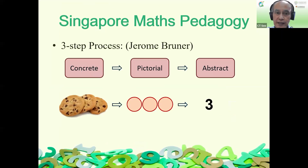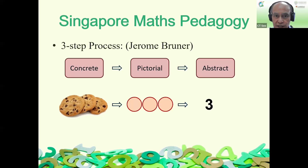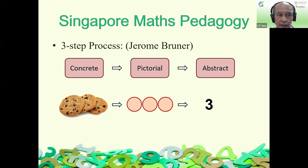Another key feature used in primary Maths is the three-step process of learning: Concrete, Pictorial, Abstract - CPA. This comes from educational psychologist Jerome Bruner. Young children learn things in a concrete manner - they need to see, touch, and play with things. That's why in kindergarten you don't just hold up a bag of apples and ask how many are there - children need to actually feel and count them by moving them.